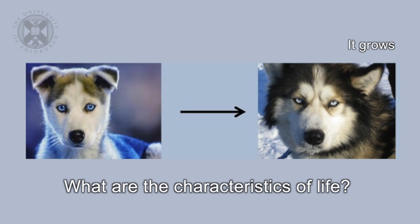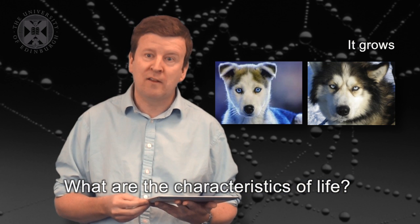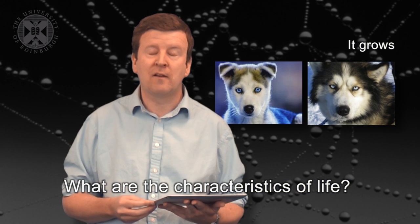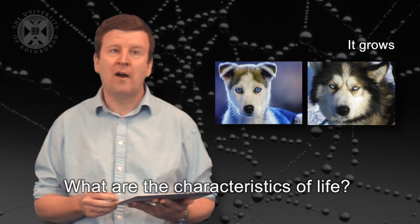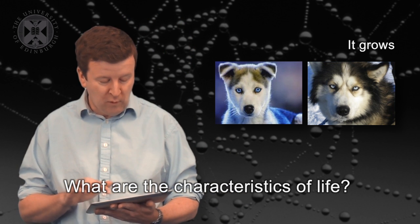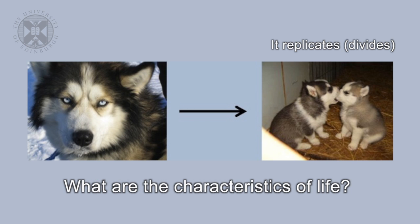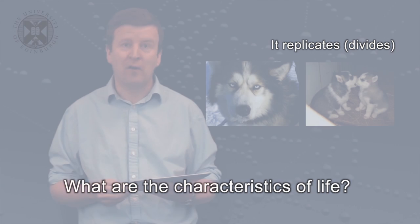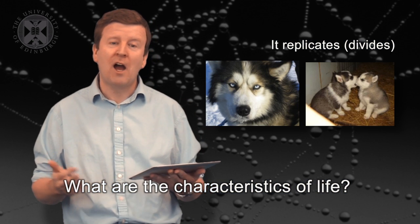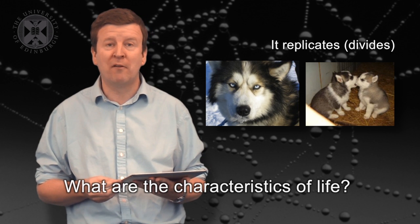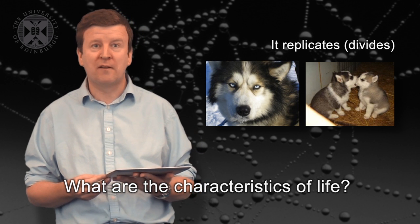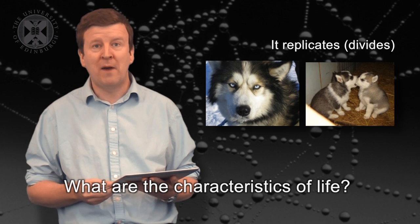Life also seems to grow. If you've ever had a pet dog, it starts off as a puppy and grows to an adult dog, and if you look around at most of life on Earth it seems to grow — this seems to be a characteristic of living things. Life also replicates; if it didn't it wouldn't persist for very long. Dogs produce puppies, and replication seems to be necessary for life to persist on a planet for many generations.